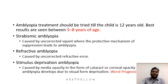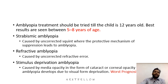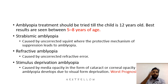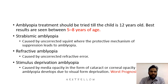This is what is called lazy eye — the nerve gets weakened without any findings. Coming to strabismic amblyopia, it is caused by uncorrected squint where the protective mechanism of suppression leads to amblyopia. Because of the strabismus there will be confusion, because of confusion there will be suppression, and because of suppression there will be amblyopia — that is how strabismic amblyopia develops.